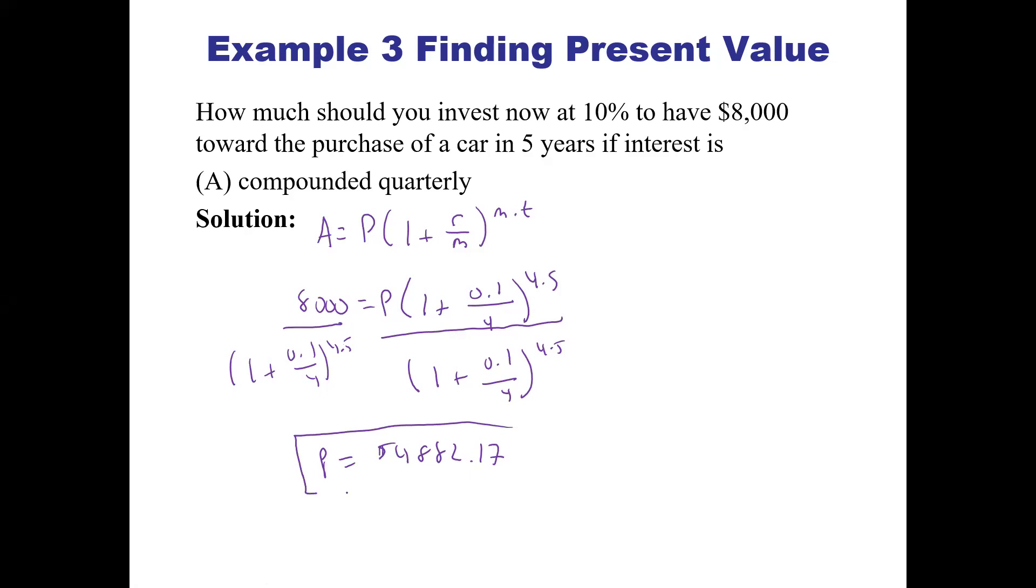That's how much we need to invest if we compound quarterly for 5 years at 10% to get $8,000. It's just solving for one of the different variables.